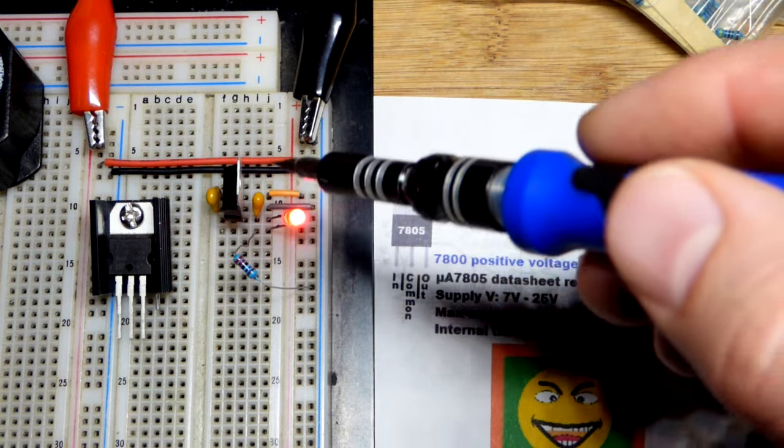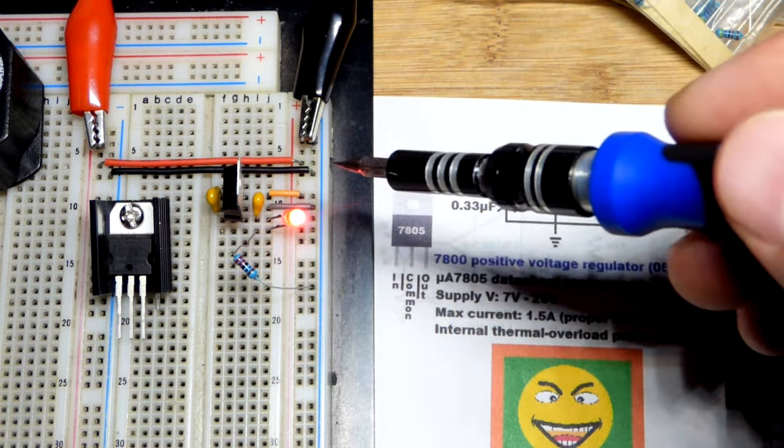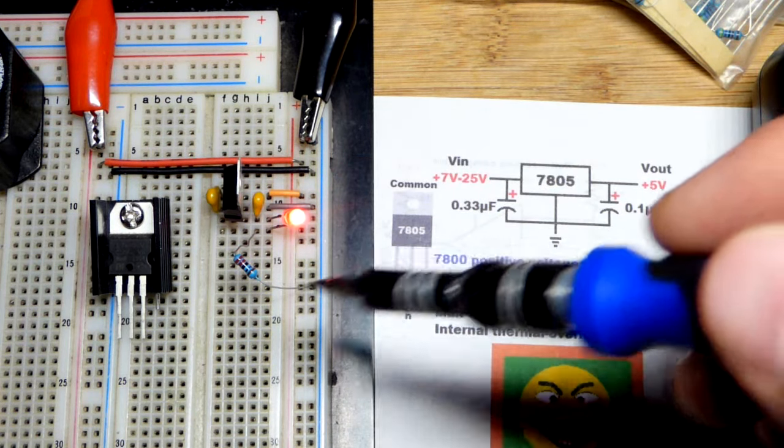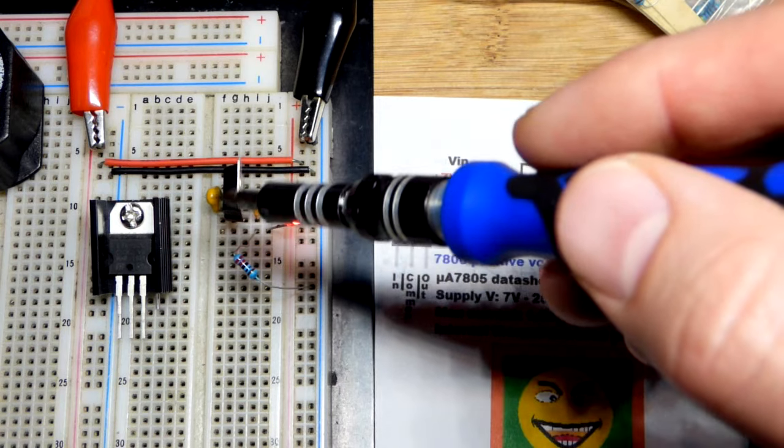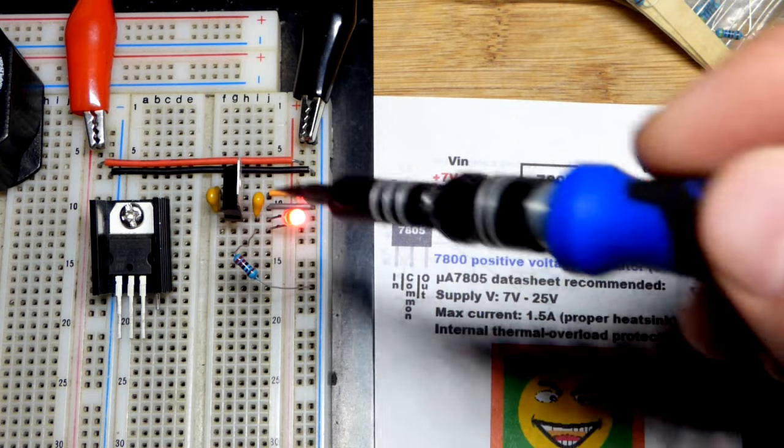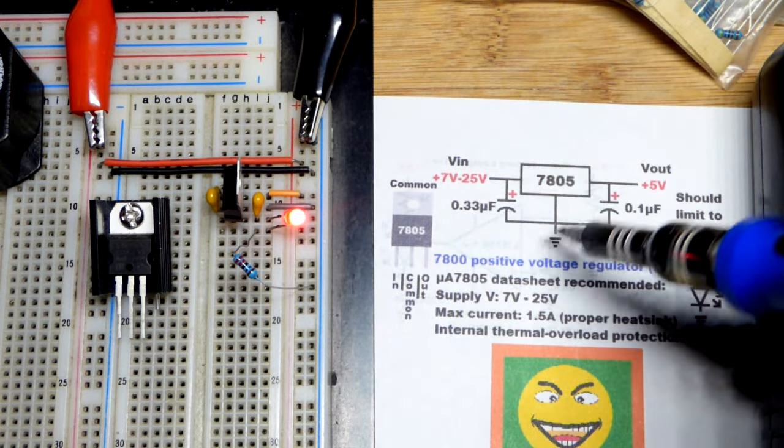Our pin layout: so the tab is to the right right there. So we have the in at the top. You can think of swiveling it that way: in, common, and then out. In, common, out. So between the in and common pins it's 0.47, and the 0.1 is between the voltage out and ground, the bottom two pins right there.